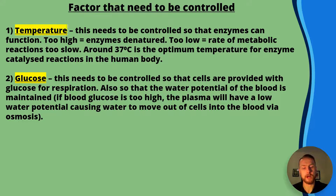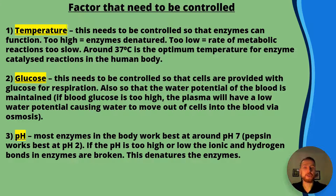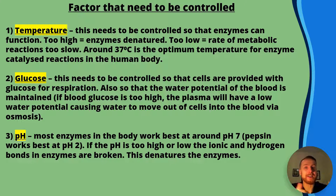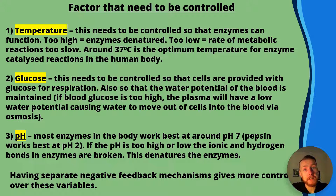Thirdly, pH needs to be controlled. The majority of enzymes in the body work best at around pH 7, but there are notable exceptions — for example, pepsin in the stomach works best at pH 2, which makes sense as it's surrounded by hydrochloric acid. If the pH is too high or too low, the ionic and hydrogen bonds within the tertiary structure of the enzyme can be broken, denaturing the enzymes.